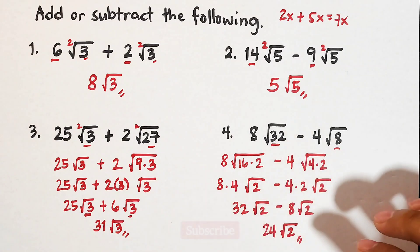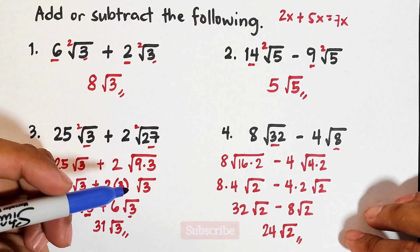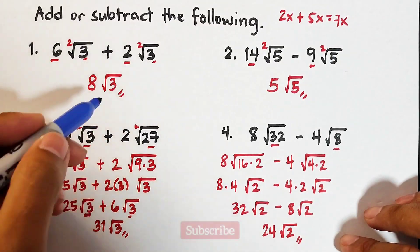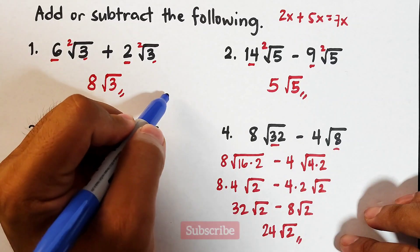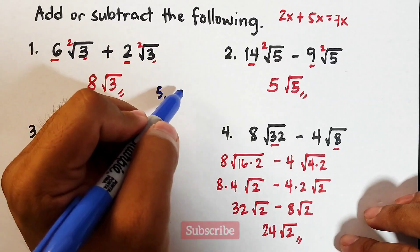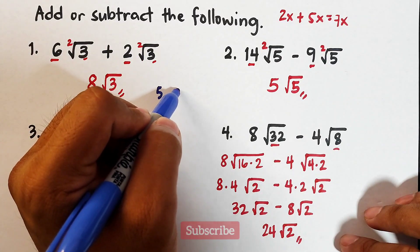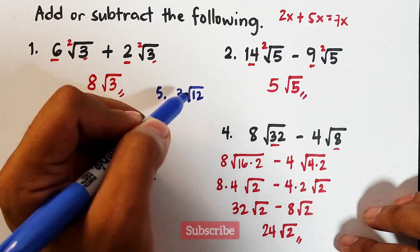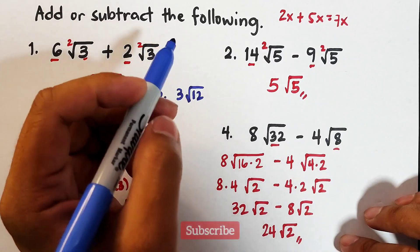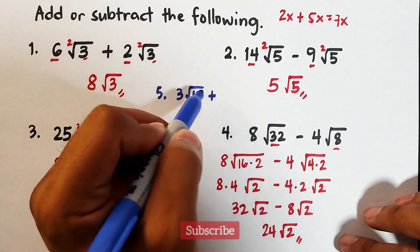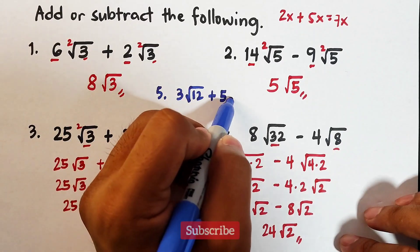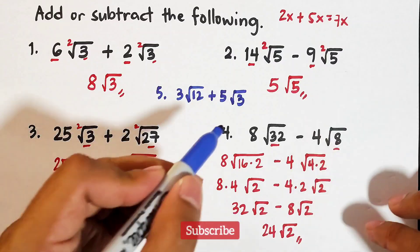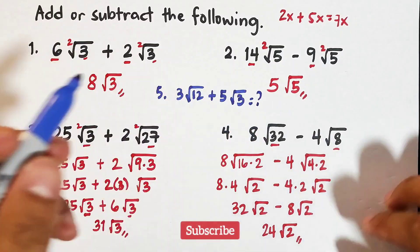Now as part of our routine, I will give you a practice problem. I want you to simplify or add these radicals: 3 times square root of 12 plus 5 square root of 3. Let me see your answer in the comment section.